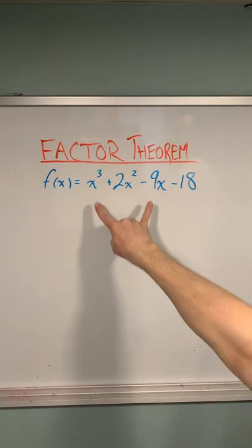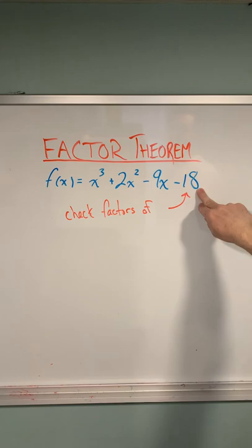Let's factor this polynomial using the factor theorem. To do this, we're going to find out what factors of negative 18 make this polynomial equal to zero when we sub them in for x.